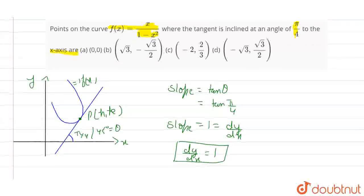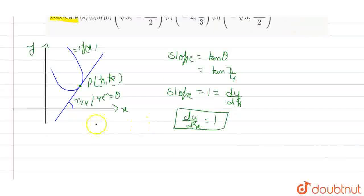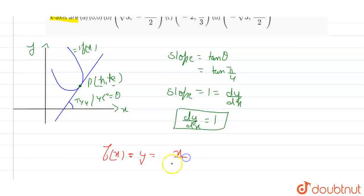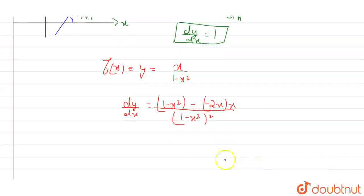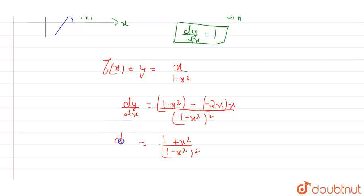So what we will do now, we have to find the values of x and y — basically h and k, the coordinates of P — where the tangent is drawn on this curve at an angle of 45 degrees. We will find dy/dx using this curve. f(x), that is y, is equal to x/(1 - x²). So dy/dx will come out as: if we differentiate it, we get (1 - x²) minus (-2x) times x, divided by (1 - x²)². This simplifies to (1 + x²)/(1 - x²)². This is the value of dy/dx, and since this equals the slope, which is 1, we set (1 + x²)/(1 - x²)² equal to 1.